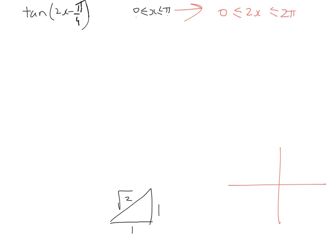And then from there, we're going to take away π/4, so we have 0 minus π/4, 2x minus π/4. And from there, we've got -π/4 less than 2x minus π/4, less than 7π/4.